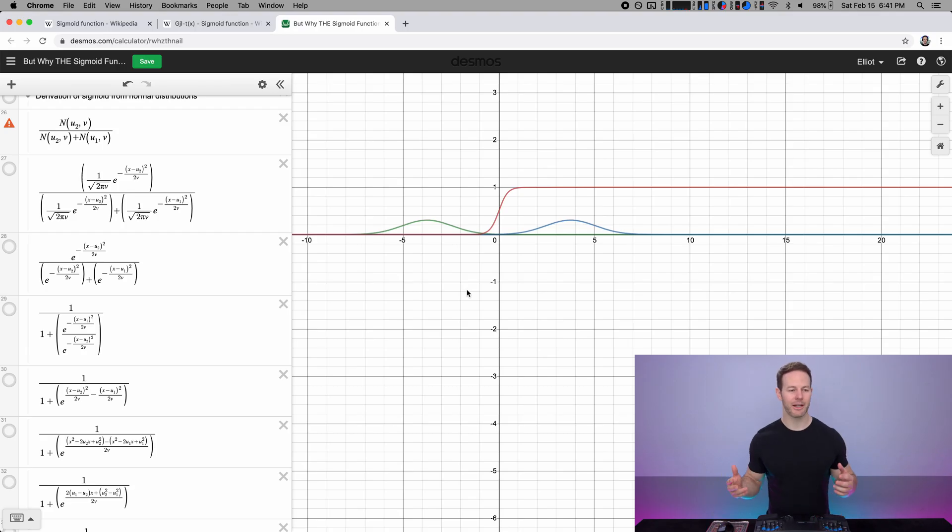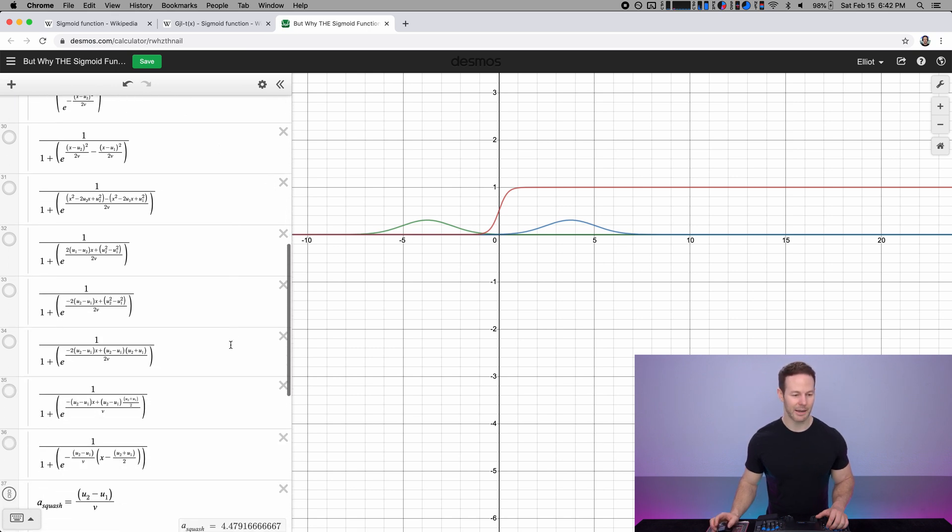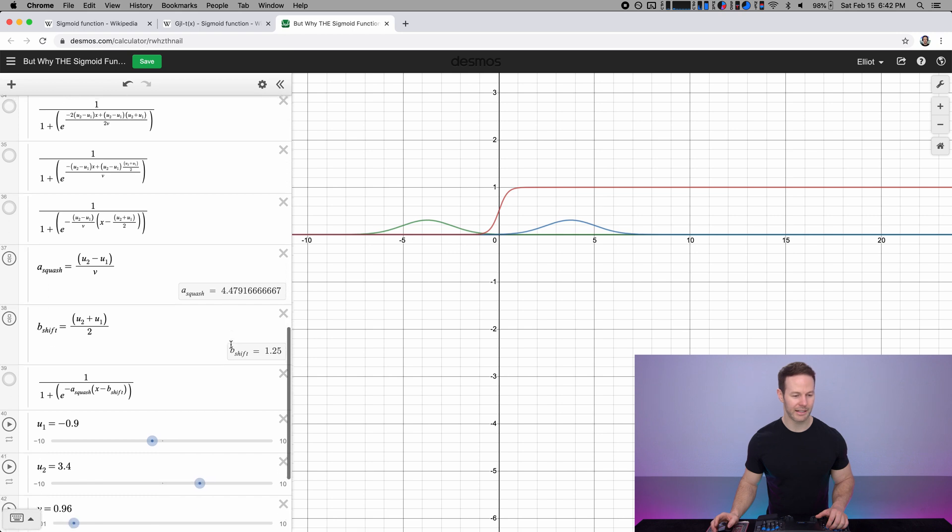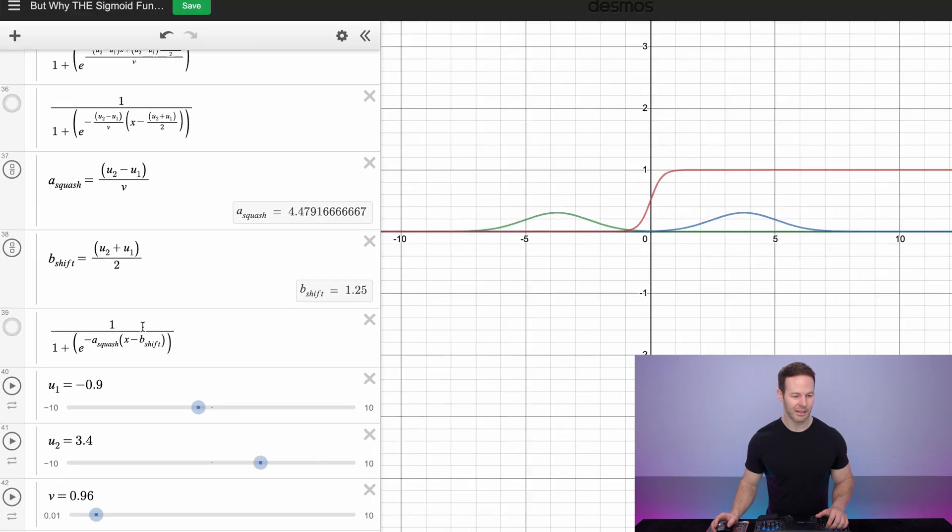So if you want the mathematical derivation of how we prove this relationship between normal distributions and the sigmoid function, I've included it on this page and I'll link to it in the description if you want to go through it, or you can just pause the video and look at these steps. But when we get down to the end, we have this value can be replaced by an A, the squashing value. This value can be replaced by B, the shifting value. And as we move the means around, it changes the shifting, it changes the squashing, but this is essentially the sigmoid function with some squashing and shifting.